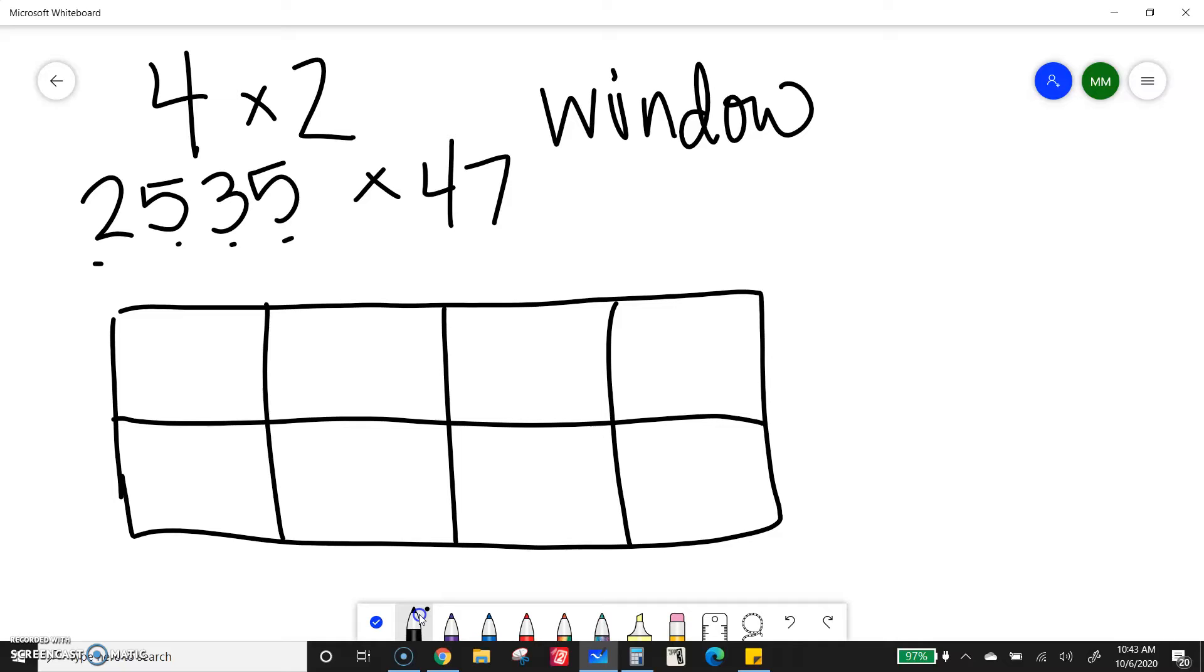Because I have one, two, three, four, so I need four boxes, two digits, so I need two going down. So I'm going to write the value of each spot. So that first two is 2,000, then I have 535, and I have 47.